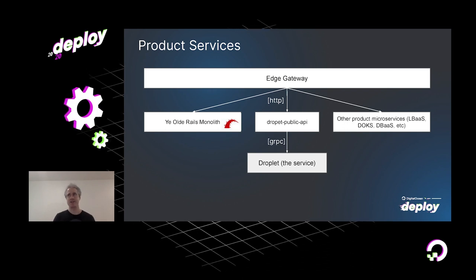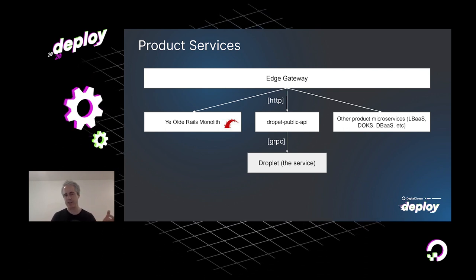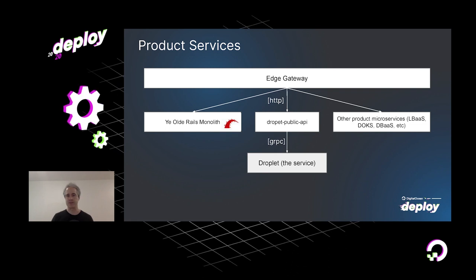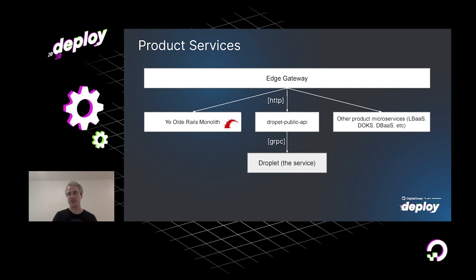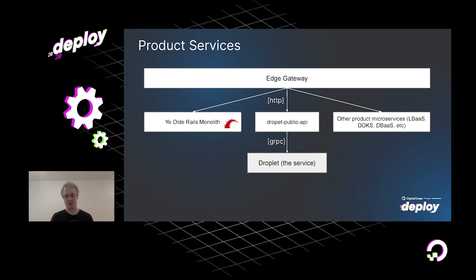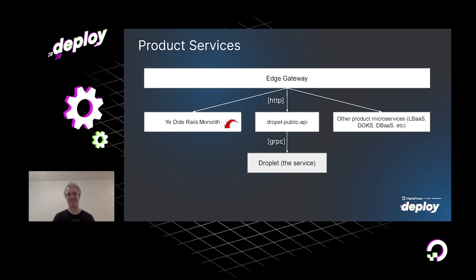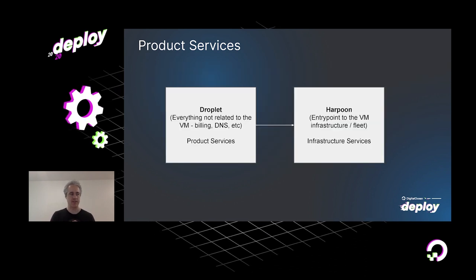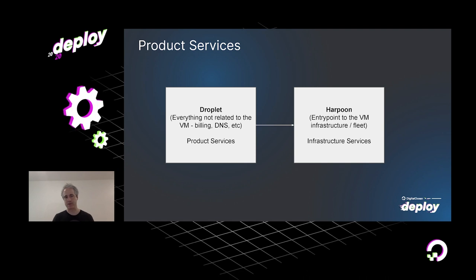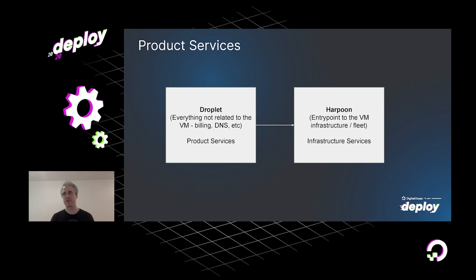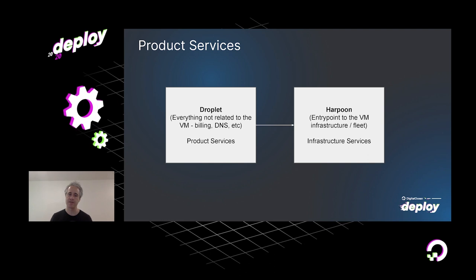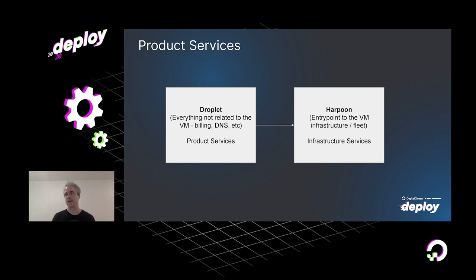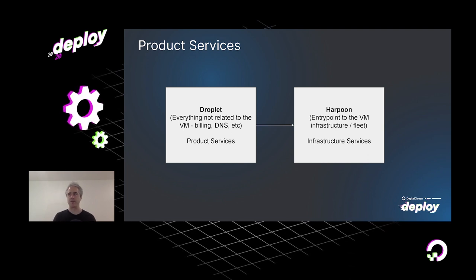The Droplets Public API service effectively translates the incoming HTTP request into a gRPC request, which is what we use to communicate between services at DigitalOcean. That gRPC request is directed to a product service called Droplet. A product service is primarily focused on sources of truth for the Droplet product itself — valid sizes available, regional availability — and ensuring that when a user requests a Droplet, there aren't any overages in limits.